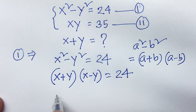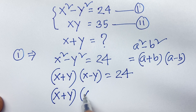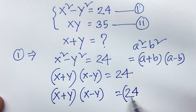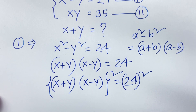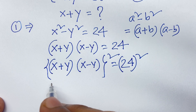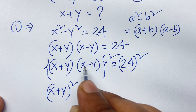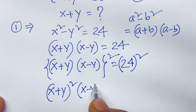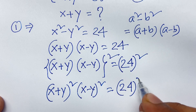Now we have (x plus y) times (x minus y) equals 24. I use both sides whole square, then here is (x plus y) whole square times (x minus y) whole square equals 24 squared.